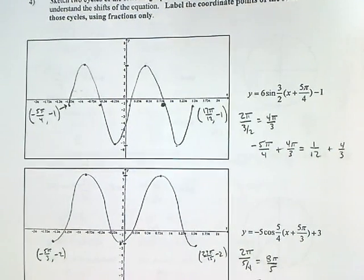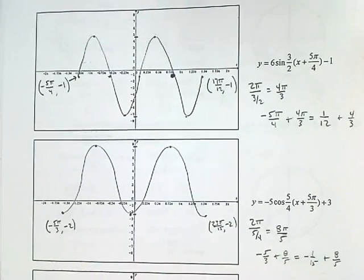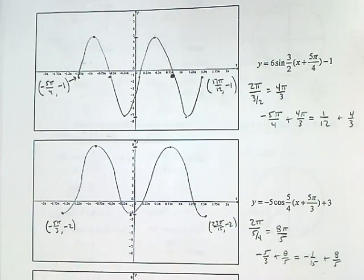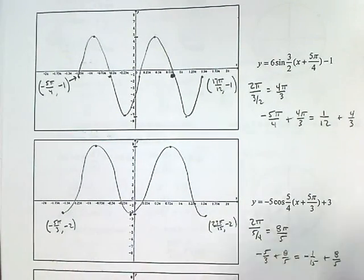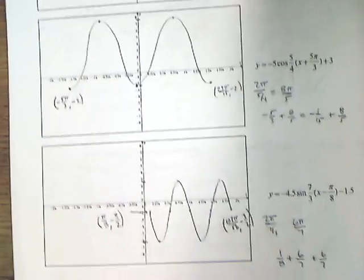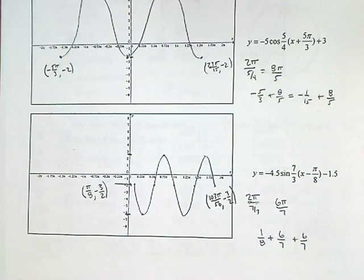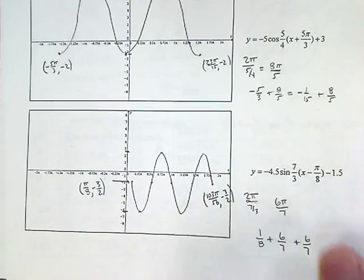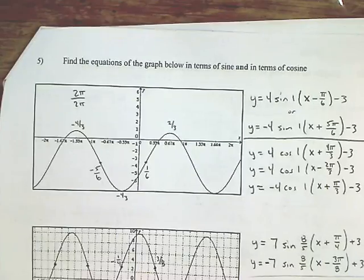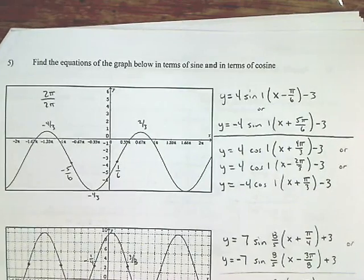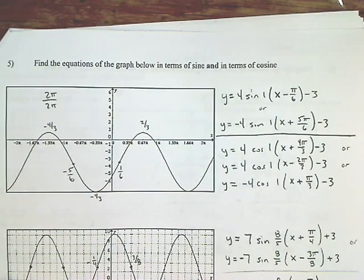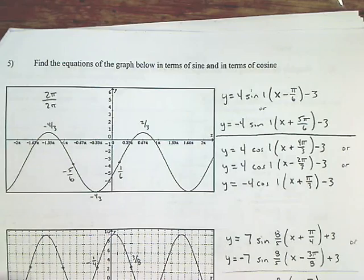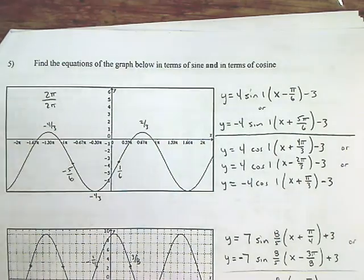Are we going to do 2-2? Is that what it's going to be tomorrow? Just pause if you need to. Here's a whole bunch of equations for it. You need one from sine and one from cosine — it just depends which locator point you pick.